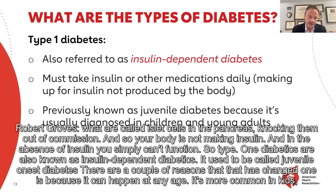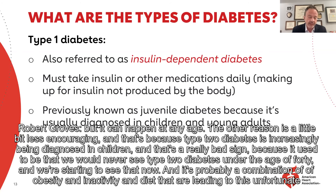Type 1 diabetics are also known as insulin-dependent diabetics. It used to be called juvenile-onset diabetes, but that has changed for a couple of reasons. One is because it can happen at any age — it's more common in kids but can happen at any age. The other reason is less encouraging: type 2 diabetes is increasingly being diagnosed in children, which is a really bad sign. It's probably a combination of obesity, inactivity, and diet that are leading to this unfortunate consequence.